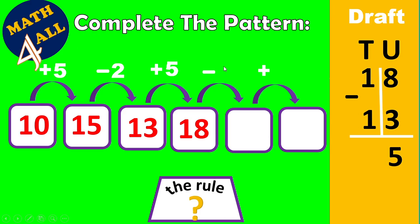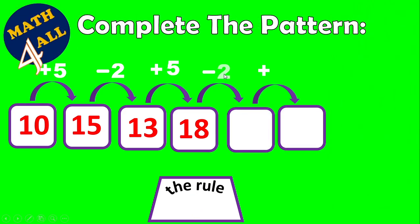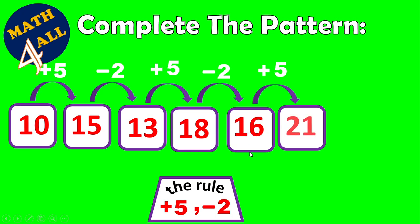Now that we have the rule — plus 5, minus 2, plus 5 — it is easy to find the missing number. 18 minus 2 equals 16, then 16 plus 5 equals 21. So 21 completes the pattern.